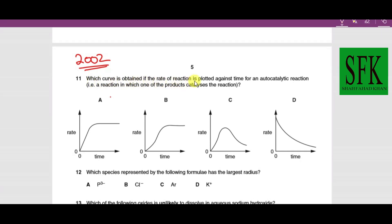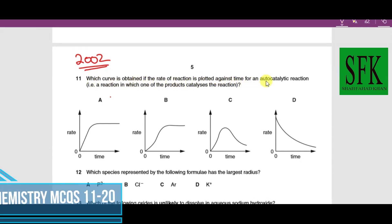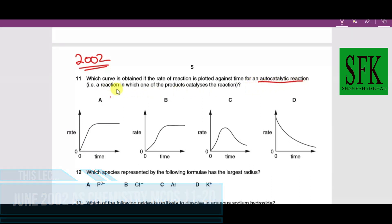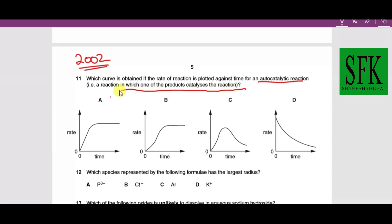Which curve is obtained if the rate of the reaction is plotted against time for an auto catalytic reaction—a reaction in which one of the products catalyzes the reaction? It's easier to just learn the curve of such reactions.